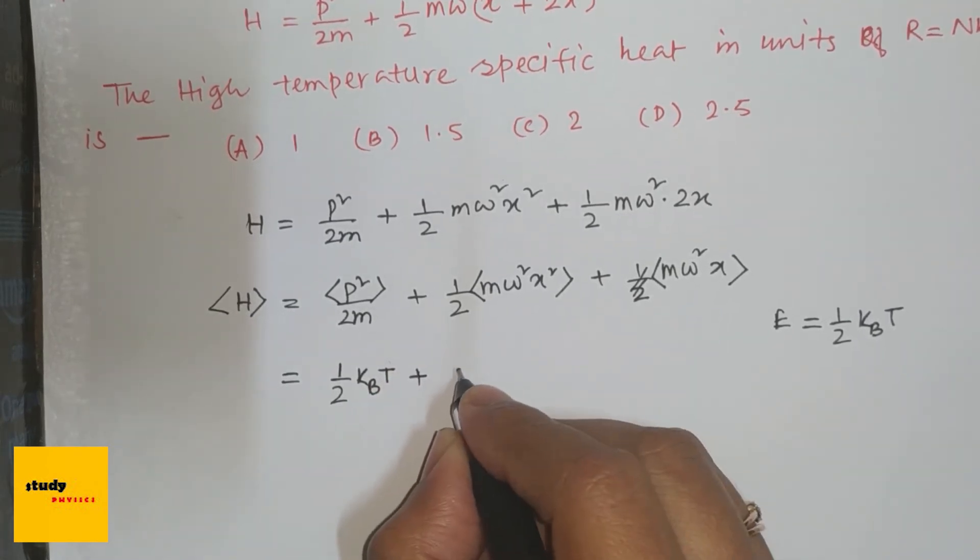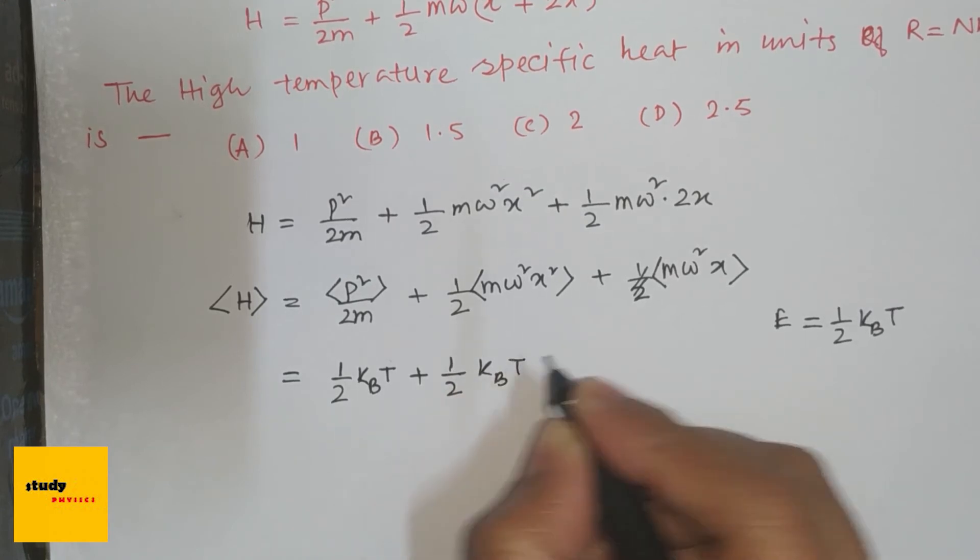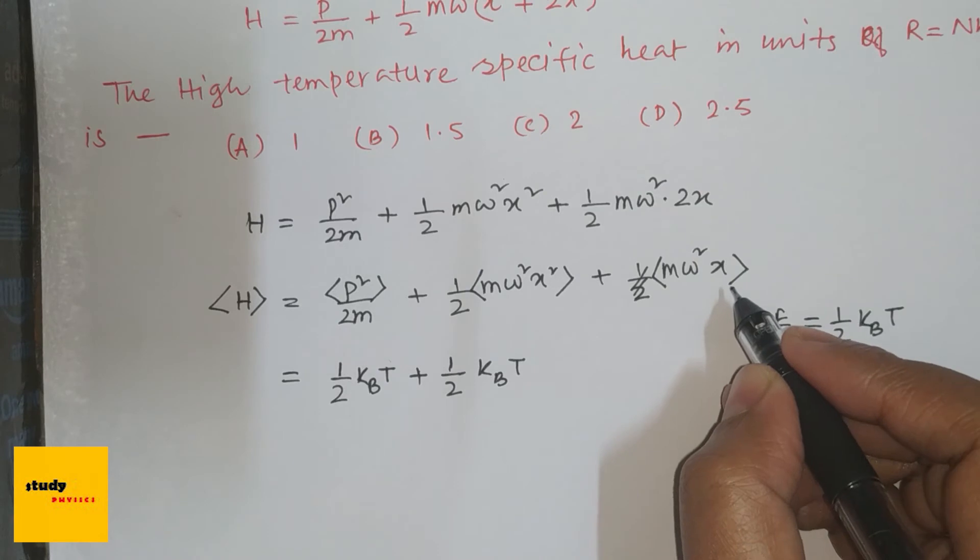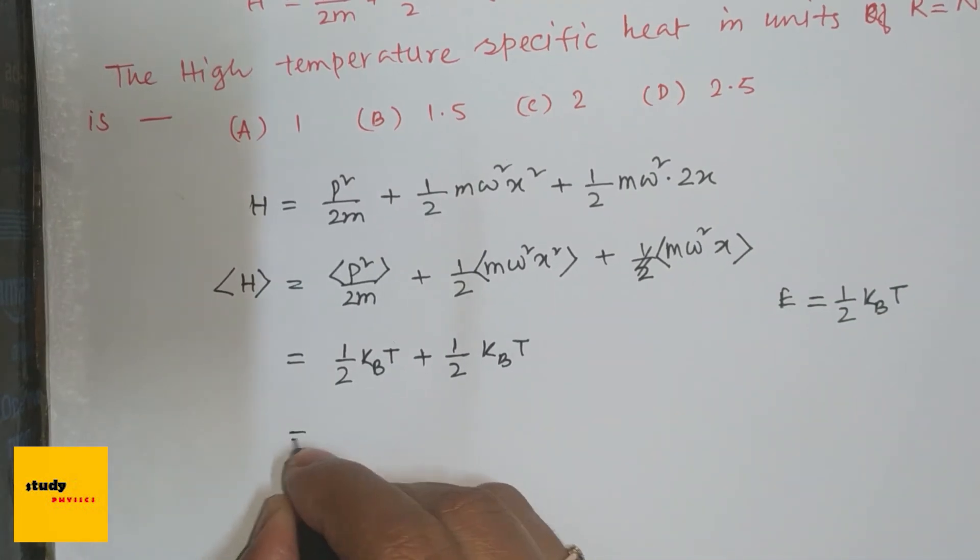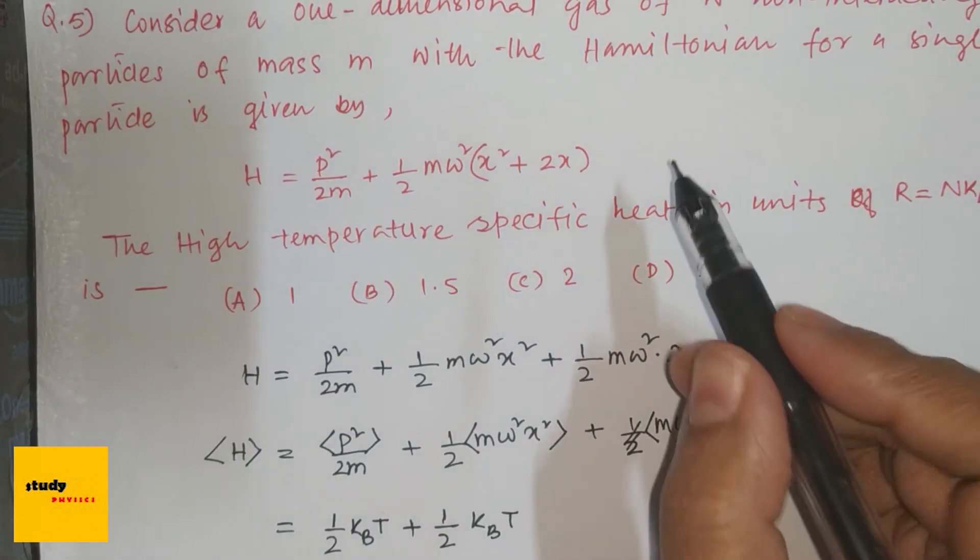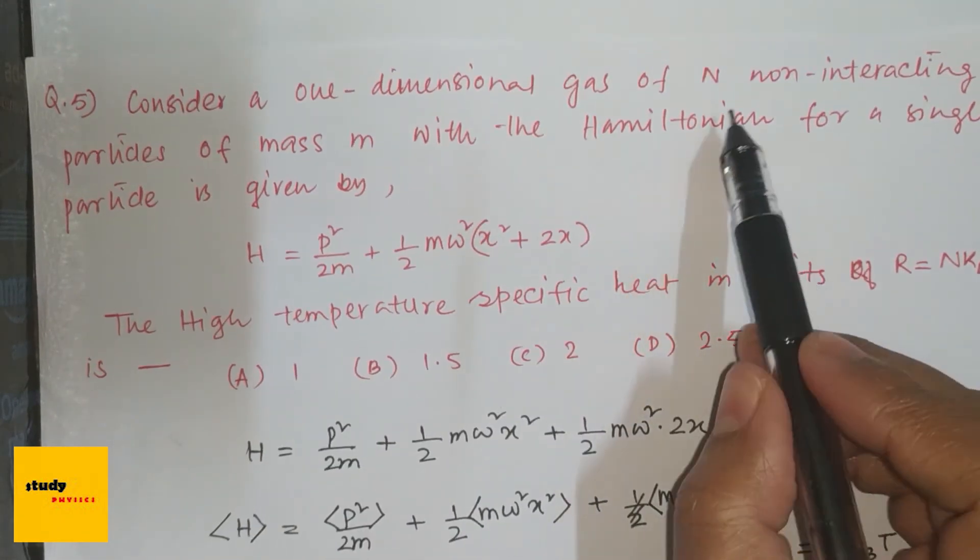And this term will be zero because first of all, this is an odd function, so this is zero. Then k_B T, and here they told us that for N non-interacting particles.